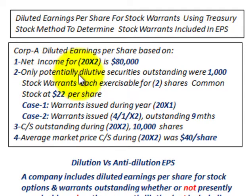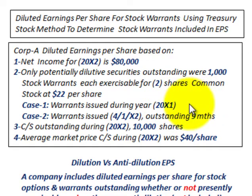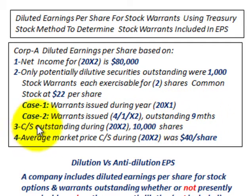The only potentially dilutive securities outstanding were 1,000 stock warrants, each exercisable for two shares of common stock at $22 per share. So for each warrant held, the warrant holders could exercise them to buy two shares of common stock at $22 per share. We're going to look at two cases: Case 1, where the warrants are issued during year 20x1, so they're outstanding the entire year 20x2; and Case 2, where the warrants are issued on 4/1/x2, so they're only outstanding for nine months. The common stock outstanding during 20x2 is 10,000 shares, and the average market price of common stock during 20x2 was $40 per share.